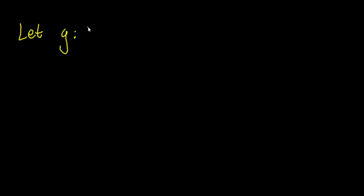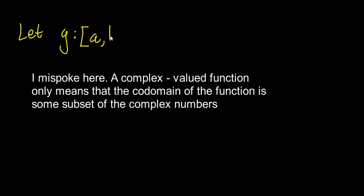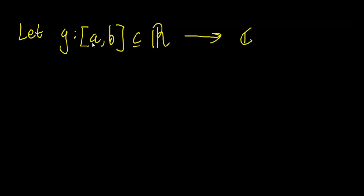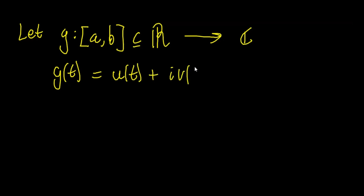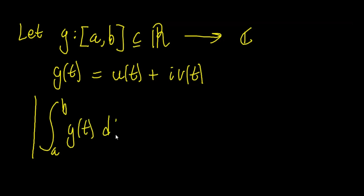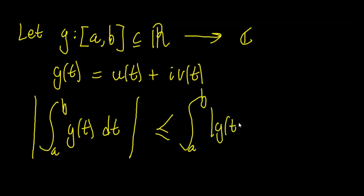Let g be a complex-valued function, meaning it sends some element in an interval of the real numbers to a complex number. We can write g(t) = u(t) + i·v(t), where u and v are its real and imaginary parts. Assuming those parts are integrable, in this video we're going to show the triangle inequality for complex-valued functions: the modulus of the integral from a to b of g(t) dt is less than or equal to the integral from a to b of the modulus of g(t) dt.